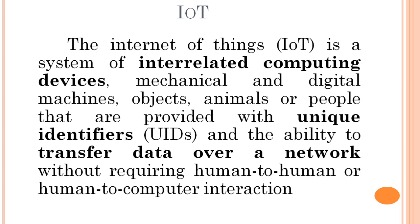A simpler form of definition: IoT is a system of interrelated interconnected objects that communicate over a wireless network. If a system has the ability to communicate over a wireless network, we can call it IoT. Another form: connected physical objects that are accessible through the internet — any physical object accessible through the internet falls under the category of IoT.